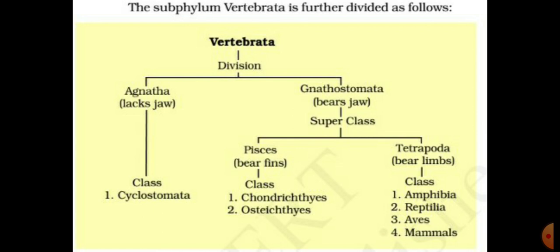In non-chordates there are 10 phyla from Protozoa up to Hemichordates. Now for the chordates: Chordata means the notochord is present in the body of that animal. The peculiar characters of chordates include: first, the presence of several paired gill slits for respiration; second, the notochord is present; and third, the nerve cord is present. Animals possessing these characters are included in the chordates.